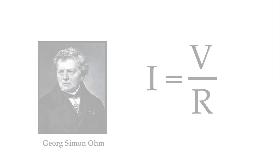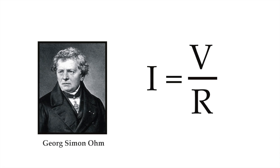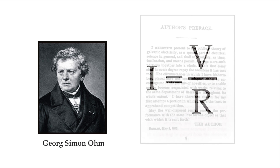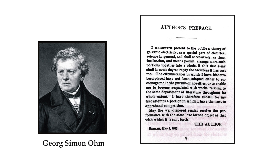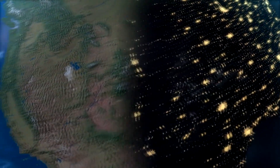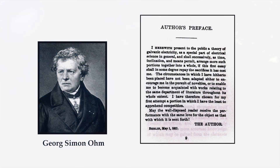When George Simon Ohm first published his Law of Resistance in 1827, he intended for it to be applied to other fields of study other than electricity. In fact, the only reason he applied it to electricity at all was because it was the field of study with the least amount of competition for explanations — he states this explicitly in the preface of his book, The Galvanic Circuit Investigated Mathematically. After his theory was proven true, society became so enamored with all the technological wonders electricity brought that his original hypothesis, just like the Tablet of Shamash, was lost and forgotten.